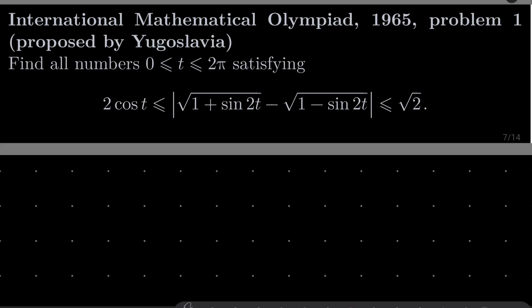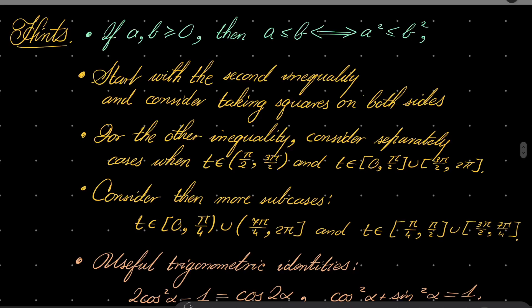So it's a nice problem for trigonometry, not terribly difficult. Here are my hints. First, this general algebraic fact: if a and b are non-negative numbers, then a ≤ b if and only if a² ≤ b², but it only works when a and b are non-negative. First, start with the second inequality, as it is easier, and consider taking squares on both sides.